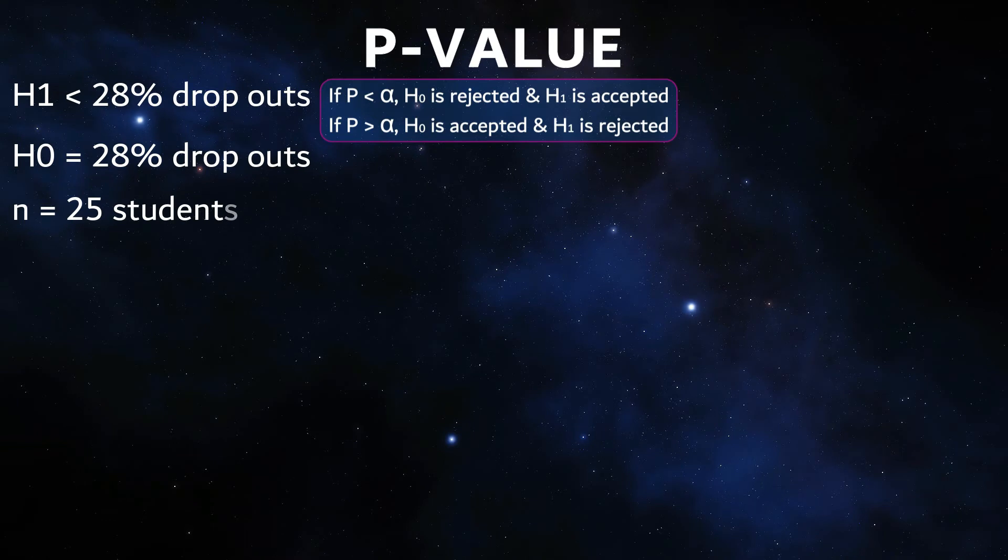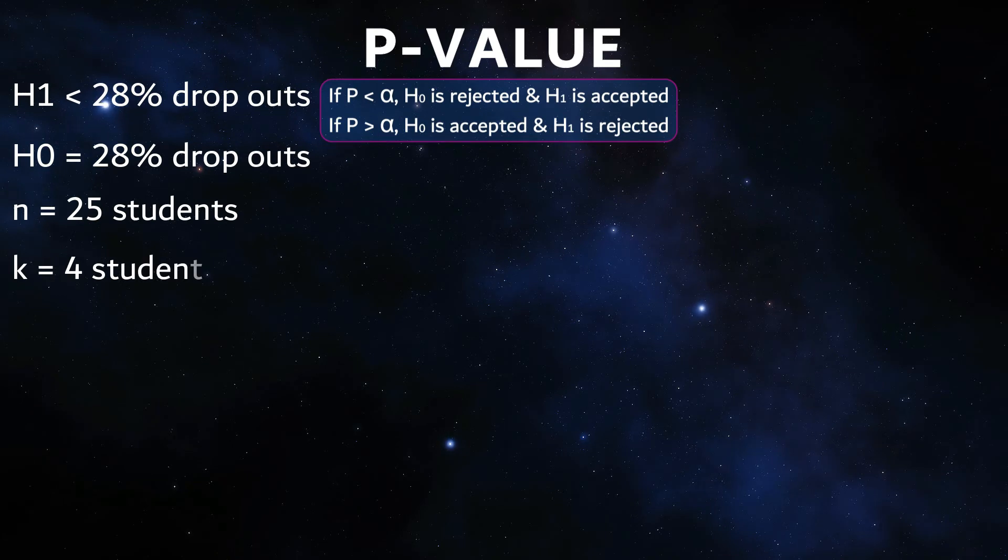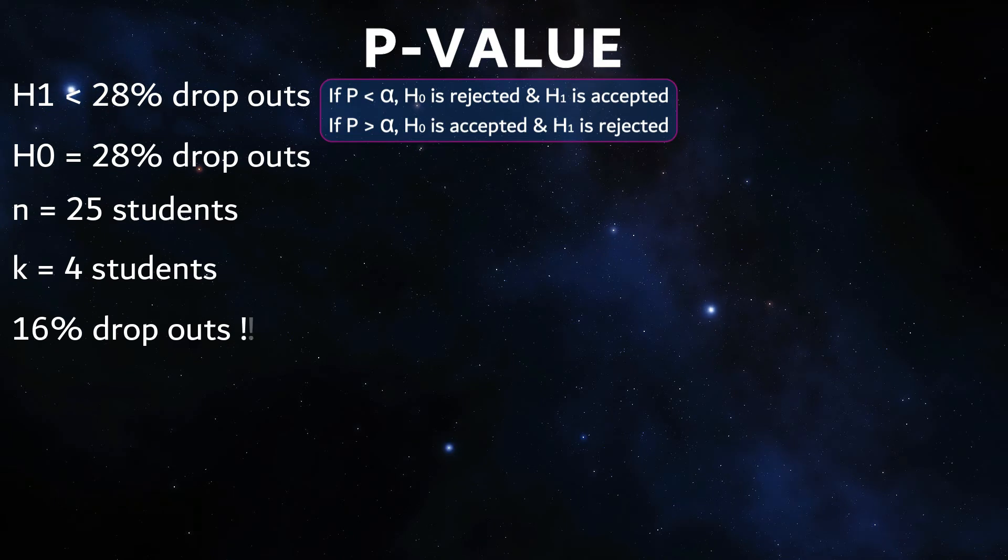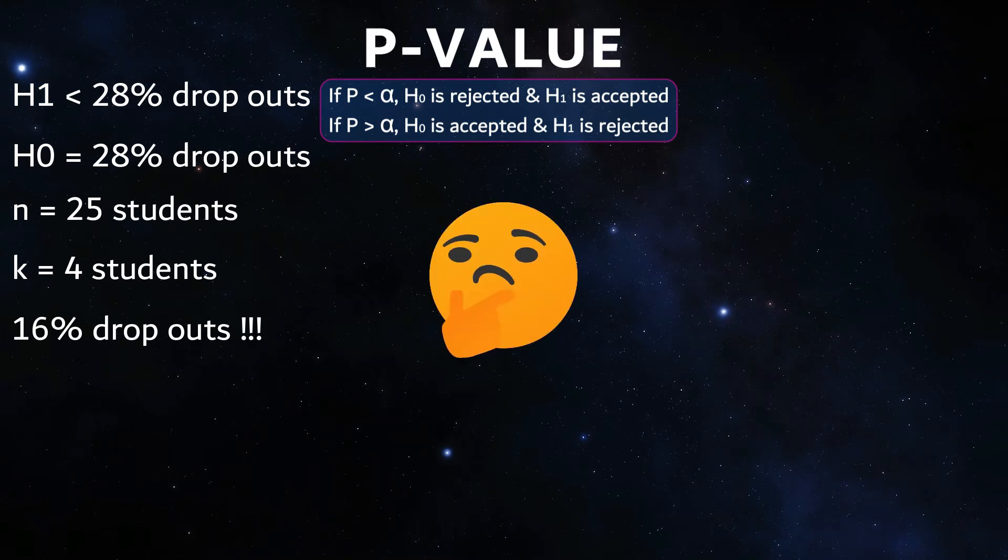Only a small sample of 25 newly started students can be considered. Of these 25 students, only four actually dropped out after the start of the individual student counseling measure, which corresponds to a rate of 16%, which is clearly below the national figure of 28%. But beware: is this value really due to the individual student guidance, or is it perhaps just a coincidence?